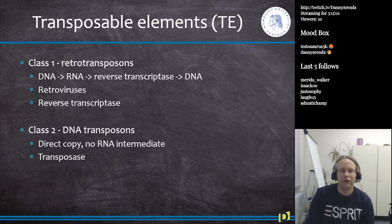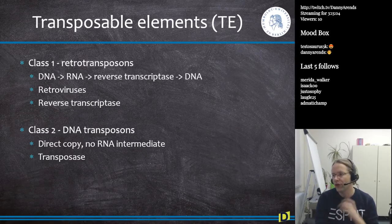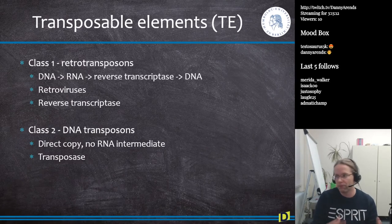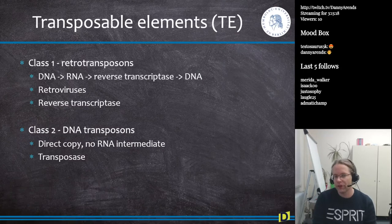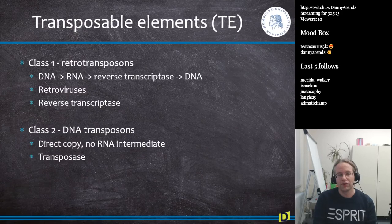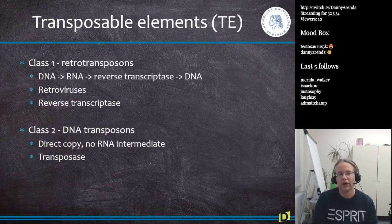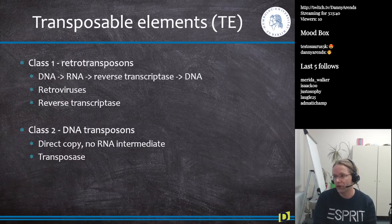Transposable elements come in two different classes. Class one is called a retrotransposon, which works similarly to a retrovirus. They are generally made of DNA, they recruit the host system and get translated into RNA, then reverse transcribed back into DNA, and then integrate. They generally bring their own reverse transcriptase. Transposable elements are not passive — they can also code for proteins.